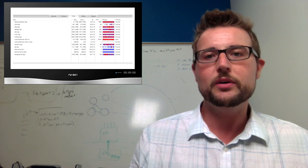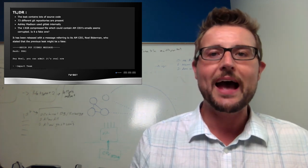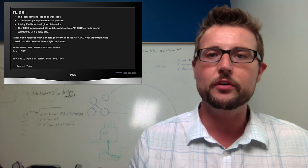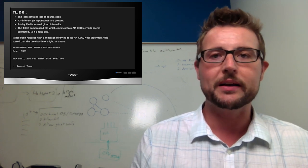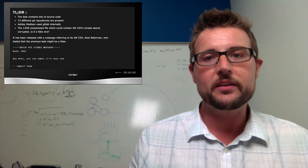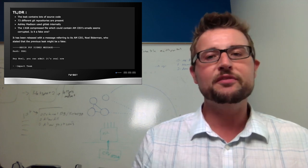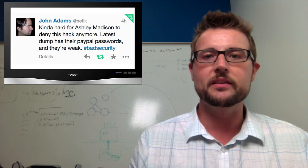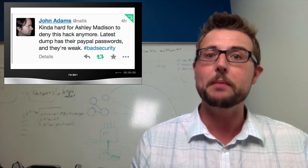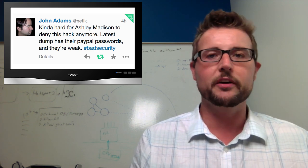This data seems to include a whole bunch of source code, basically Ashley Madison's website source code and some of the source code for the applications. It also contains, apparently, the email of Ashley Madison's CEO. And finally, there's even reports that some of the documents in this leak contain things like their PayPal passwords, which seem to be very insecure.